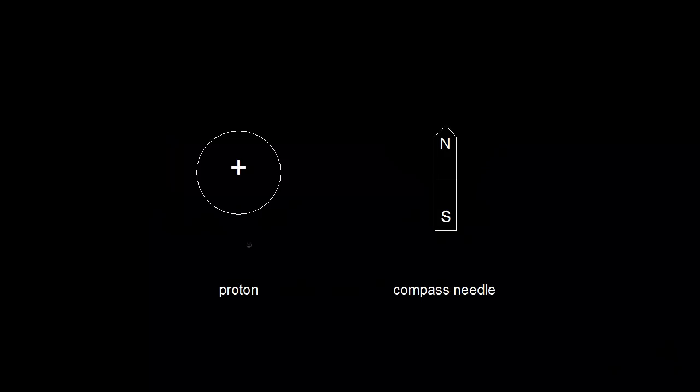The nucleus of a hydrogen atom is a proton and has a property called spin. You could think about this proton spinning — it's like a rotating sphere of charge, and any moving charge creates a magnetic field. Therefore, you can say a proton is a tiny magnet, like a bar magnet or a compass needle.